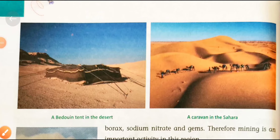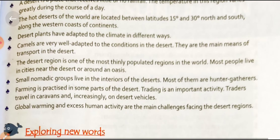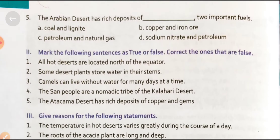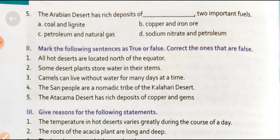Hi students, this is Sandeep Singh, your SST teacher. I have explained some parts of the exercise of chapter 5 in the previous videos. Today I am going to explain the extra questions given in your exercise book. Let's start. Today we will first explain the true/false section. Some statements are given — mark the following sentences as true or false.